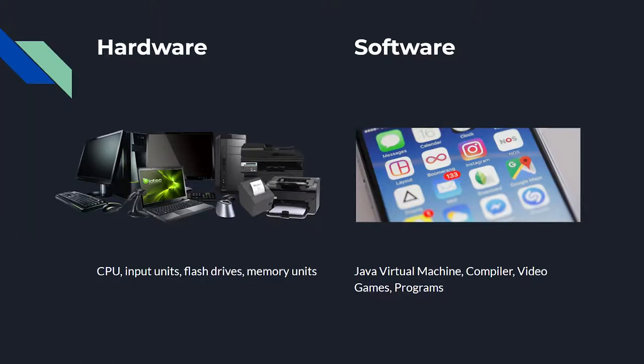First, let's go over the difference between hardware and software. Hardware is the physical machine itself. Examples of hardware are CPUs, input and output devices, flash drives, and computer parts in general.